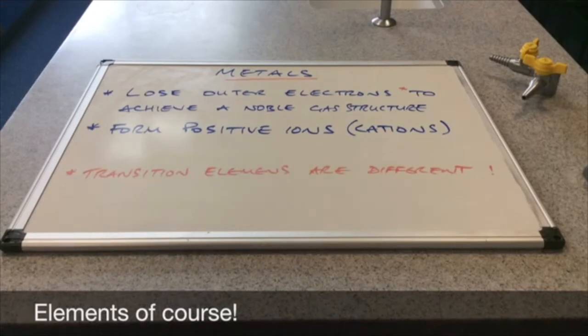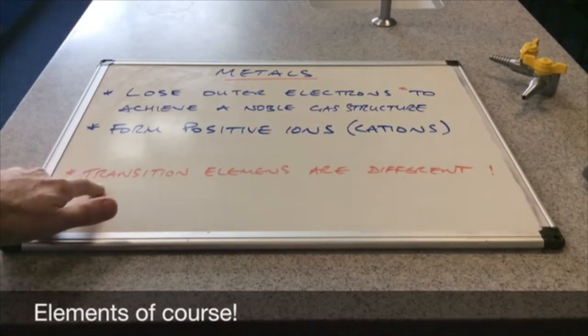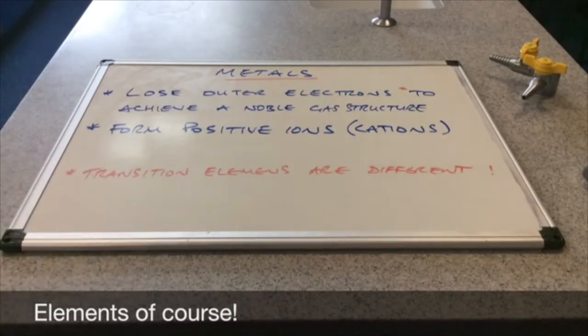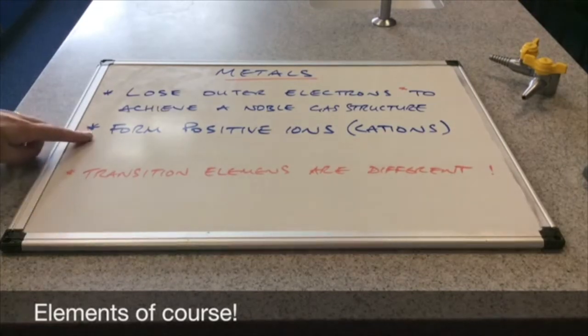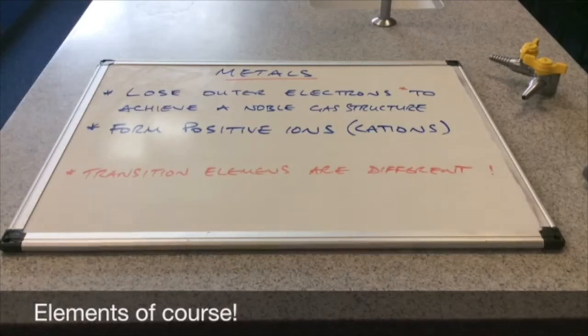And that's absolutely fine for the majority of the metals that we'll study. And it's absolutely fine for AS. But I do want to make a point that transition elements do something different. But don't worry about that until A2. So metals lose outer electrons to become stable. And when metals lose electrons, they form positive ions. And they're also known as cations.